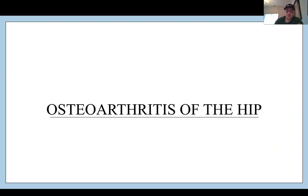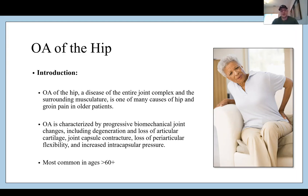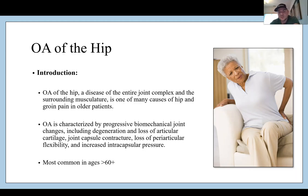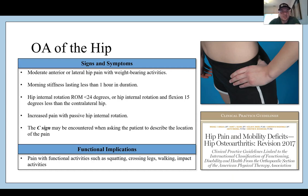Now let's get to the big topic of this lecture: osteoarthritis of the hip. Hip OA is a disease of the entire joint complex and surrounding musculature, and is one of many causes of hip and groin pain in older adults. While it affects the entire joint complex, hip OA is primarily a chondral or cartilaginous disorder, though it causes impairments in all surrounding tissues. It is characterized by progressive biomechanical joint changes including degeneration and loss of articular cartilage, joint capsule contracture, loss of periarticular flexibility, and increased intracapsular pressure. Most common in ages 60 plus.